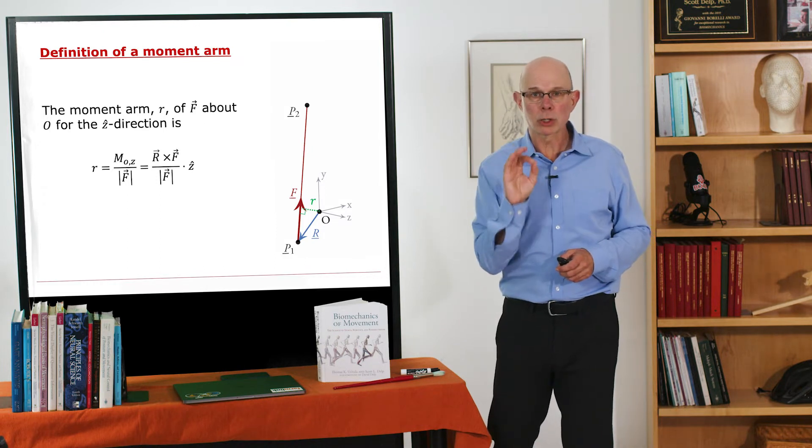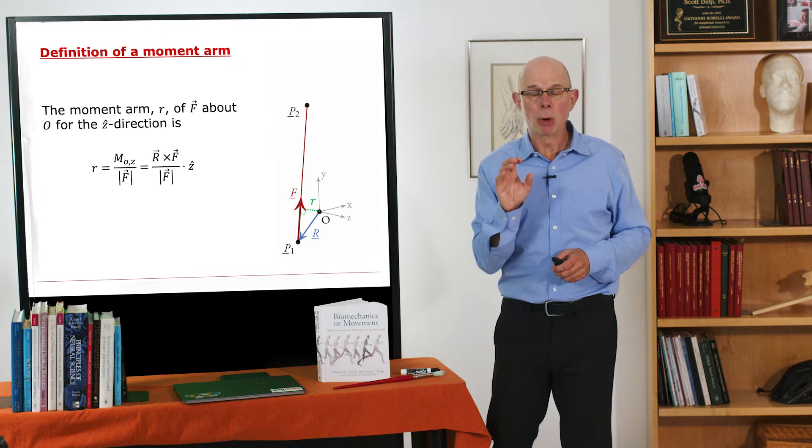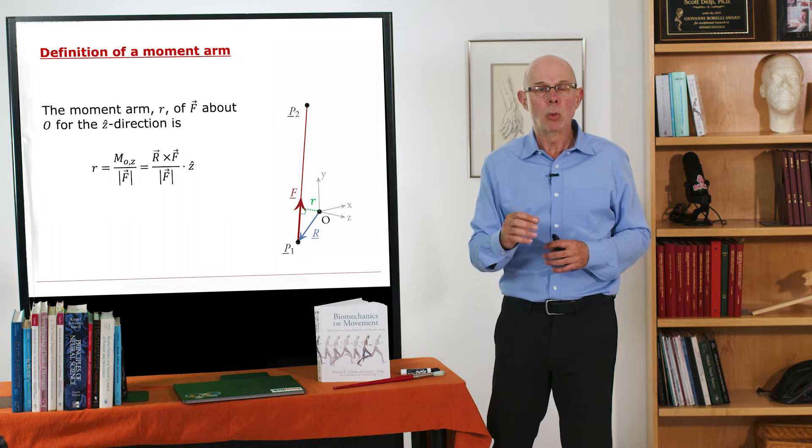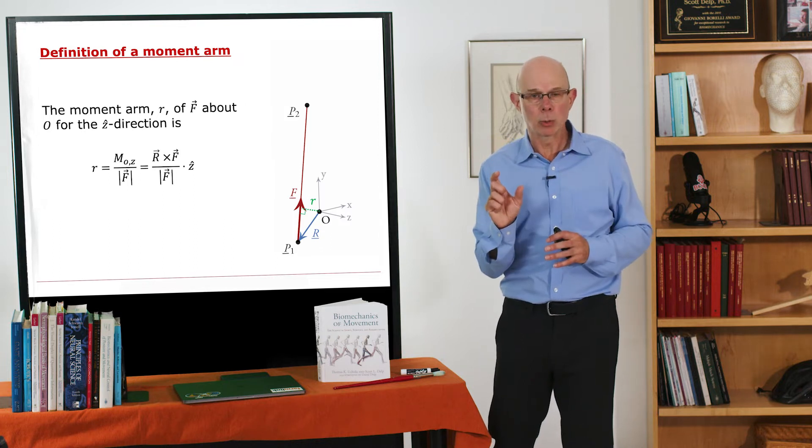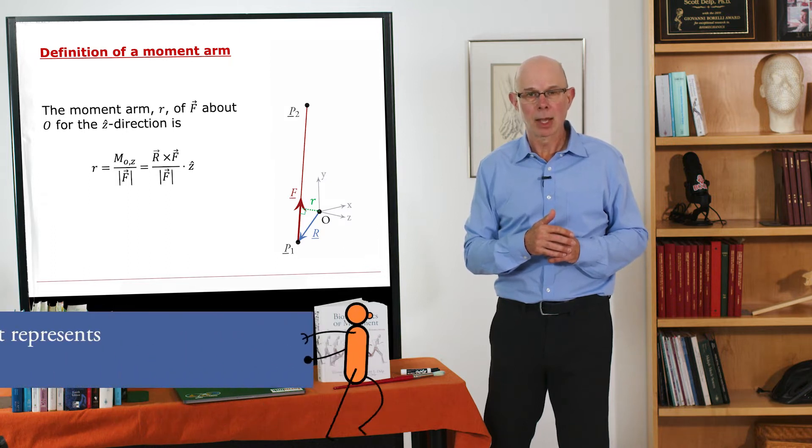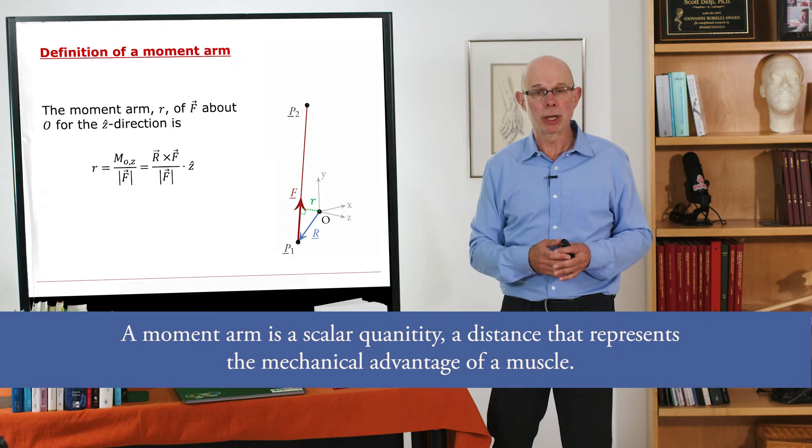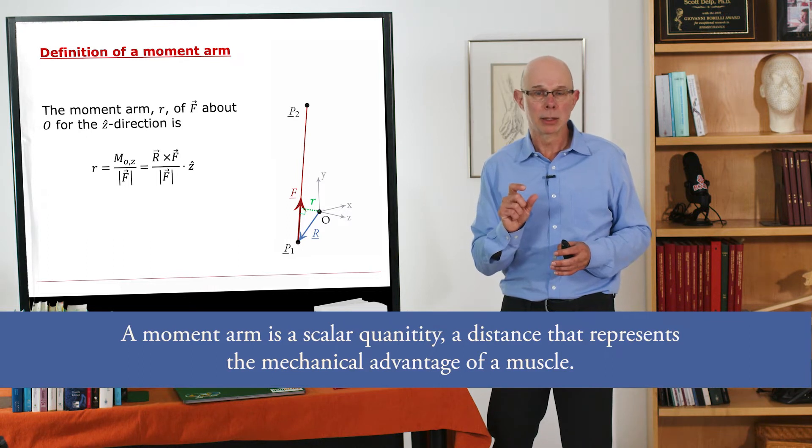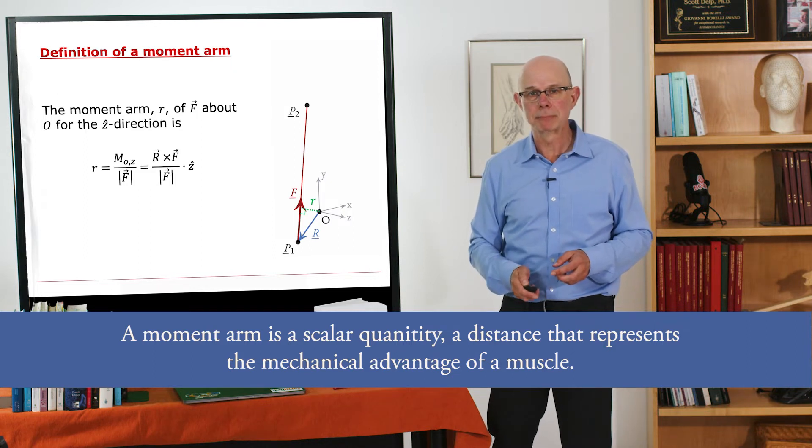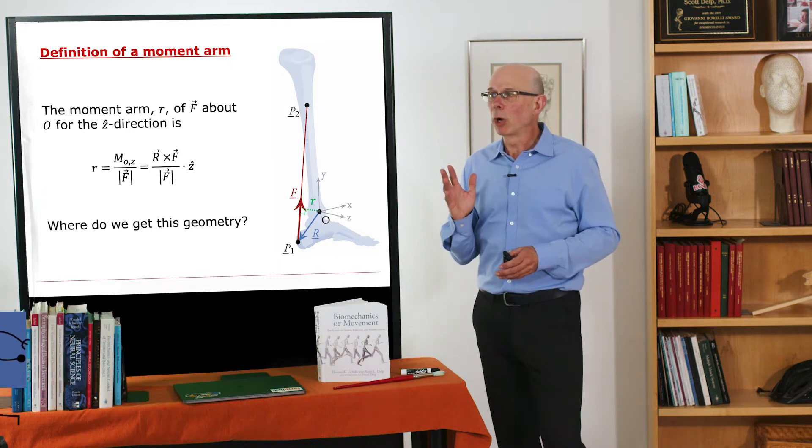So we first take the cross product to compute a moment, we divide that moment by the magnitude of the force. That gives us a vector moment arm. We then take that vector and we dot it with a unit vector along a meaningful axis. And that gives us a moment arm, which is a scalar. And that's usually how we think of moment arms, as a scalar quantity that is a distance that represents the mechanical advantage of a muscle.